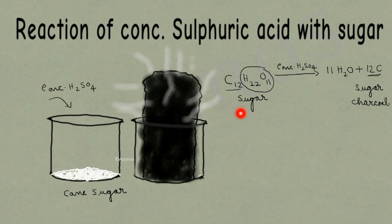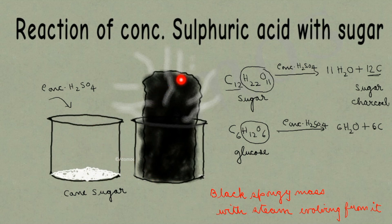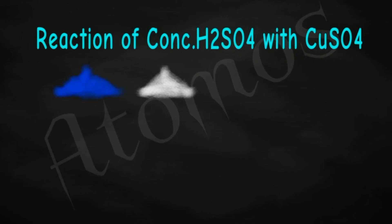Instead of cane sugar, if you take glucose or fructose, the formula is C₆H₁₂O₆. Both glucose and fructose have the same molecular formula. Treating with concentrated sulfuric acid removes chemically combined water — 6 H₂O — along with which six atoms of carbon are formed. The observation of the reaction: when concentrated sulfuric acid is added to sugar, a black spongy mass will be formed with steam evolving out. In this reaction also, sulfuric acid is acting as a dehydrating agent.